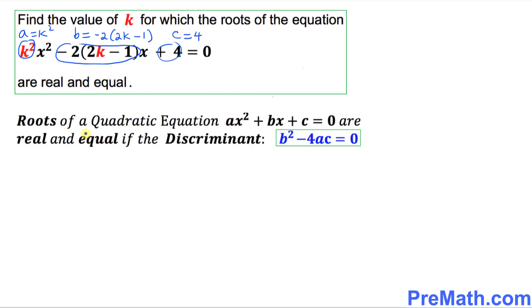Before we proceed any further, we know that the roots of a quadratic equation are real and equal if the discriminant is 0. That means b² - 4ac must be equal to 0.